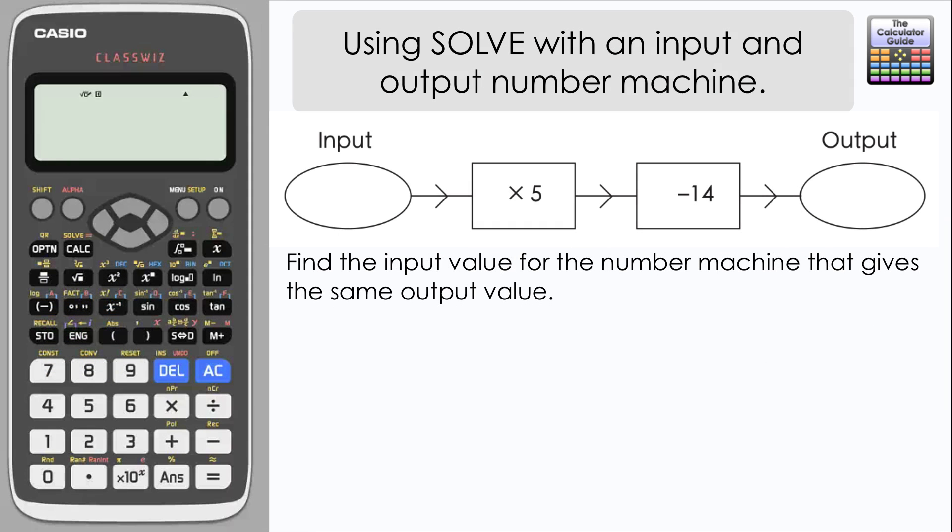You may have come across these type of questions before. Here we have a number machine and the process of going from input to output is to multiply by 5 and then subtract 14. The question is we need to find the input value for the number machine that gives the same as the output value.